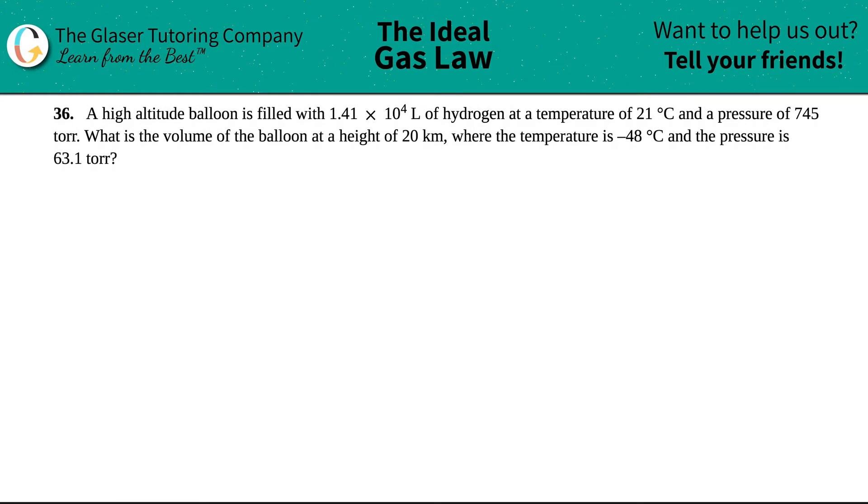Number 36: A high altitude balloon is filled with 1.41 times 10 to the fourth liters of hydrogen at a temperature of 21 degrees Celsius and a pressure of 745 torr. What is the volume of the balloon at a height of 20 kilometers where its temperature is negative 48 degrees Celsius and the pressure is 63.1 torr?